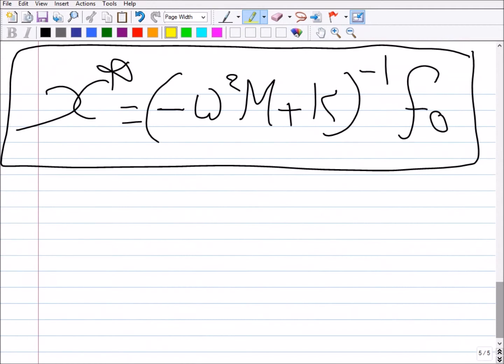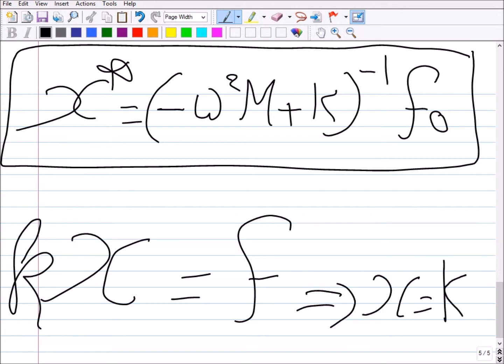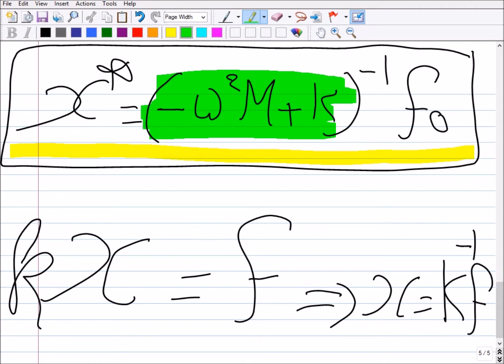In the static problem, remember we could write K times x equals F. And to get x, you said it's K⁻¹ times F, right, where F is whatever you have. Now the same happened here with us in this relation.